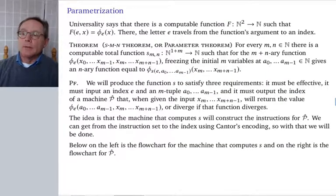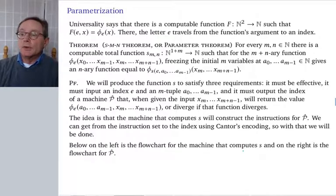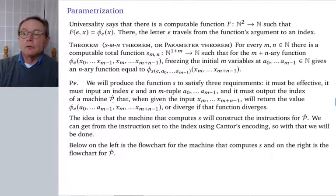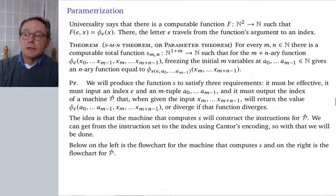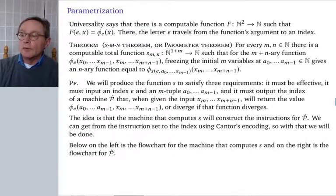For the proof, we need to produce the function s satisfying three requirements: it must be effective (computable on a Turing machine), it must take as input the index e and an m-tuple a₀ through aₘ₋₁, and it must output the index of a Turing machine p-hat that, given remaining inputs xₘ through xₘ₊ₙ₋₁, returns the value of φₑ with the first variables frozen at a₀ through aₘ₋₁.